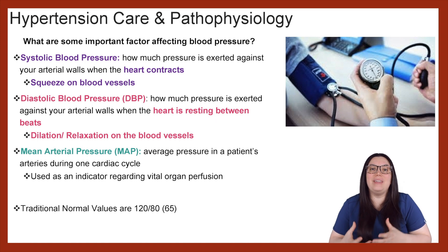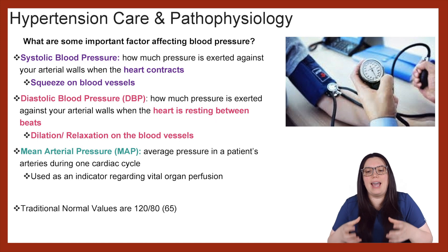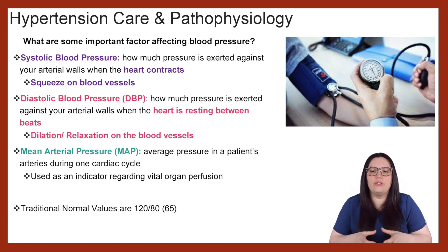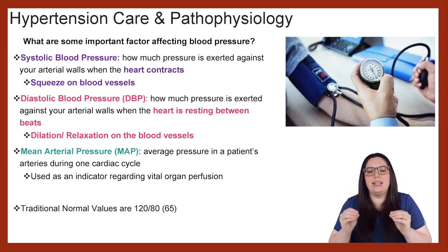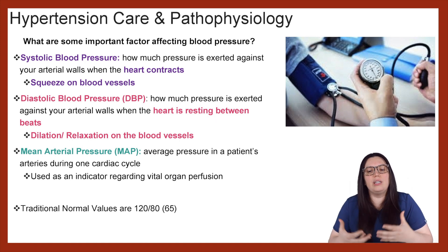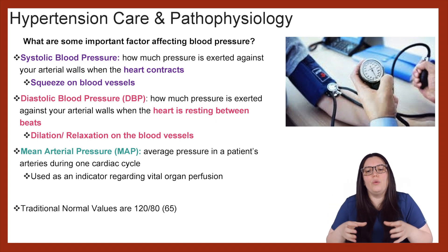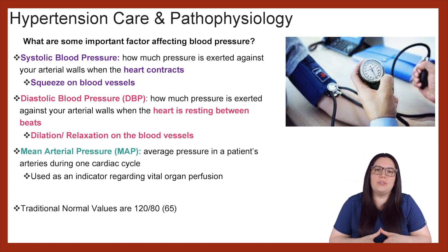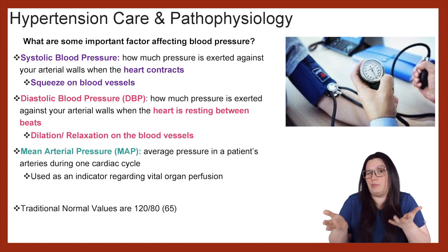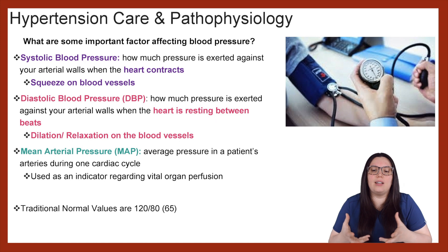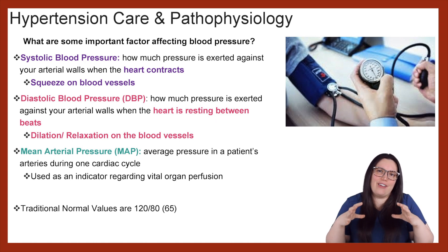And then lastly, we have our mean arterial pressure, or MAP. This is a really important thing to know. That's the average pressure in the patient's arteries during one cardiac cycle. It's also highly used as an indicator of whether our vital organs are being perfused or not. Typically, you want to see a MAP greater than 65. Normal values for blood pressure are systolic at 120 and diastolic at 80, and that's how we get that 65 MAP.